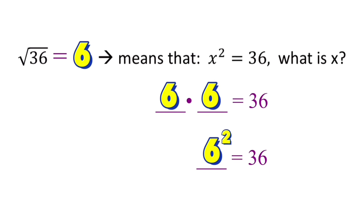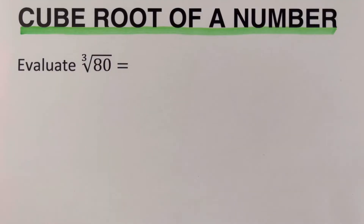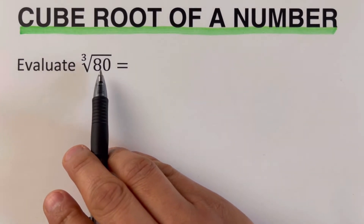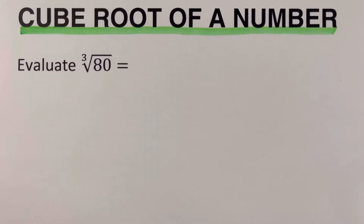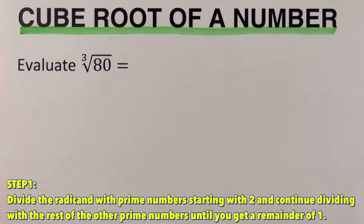That's how we evaluate a radical expression. Going back to the problem right here, we are supposed to evaluate the cube root of 80. There are steps we need to follow in order to evaluate this expression. The first step is to divide the radicand with a prime number starting with 2 and continue dividing with the rest of the other prime numbers until you get a remainder of 1.